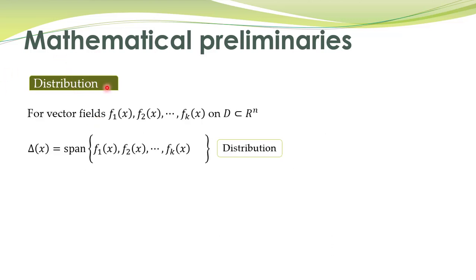Another very important concept which we shall need in our future discussions is distribution. For vector fields f1, f2 up to fk which belong to a domain that is a subset of our n-dimensional space, the span of these vector fields, denoted by delta of x, is called a distribution. The span means all vectors which can be obtained by linear combination of these vector fields.